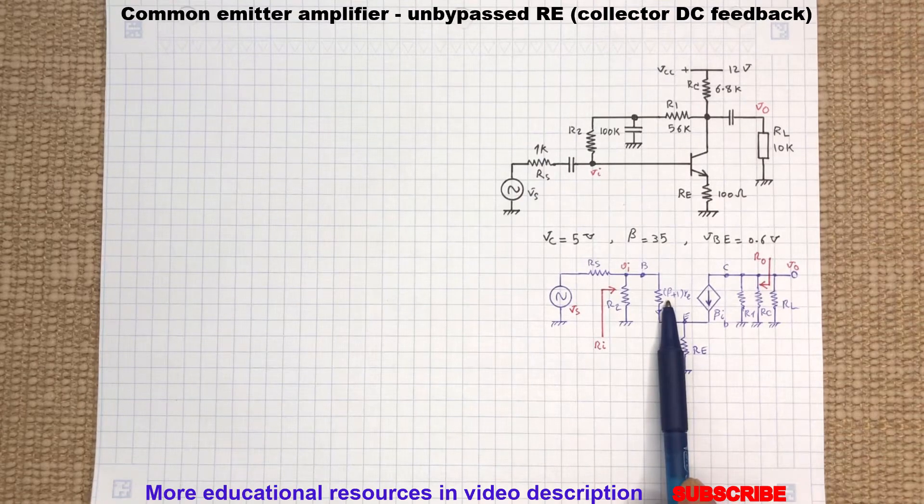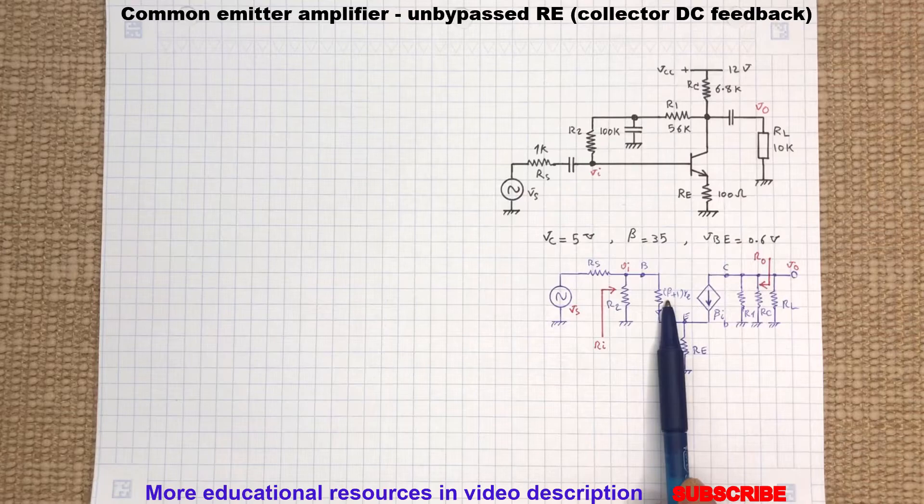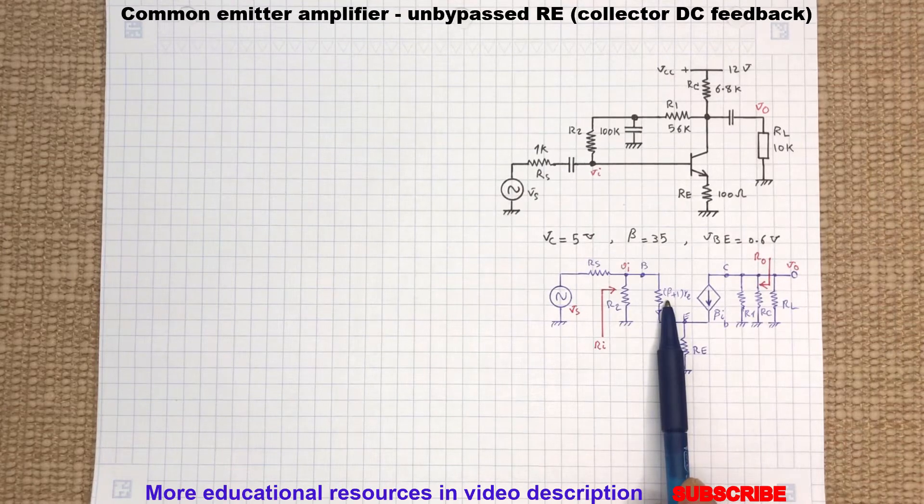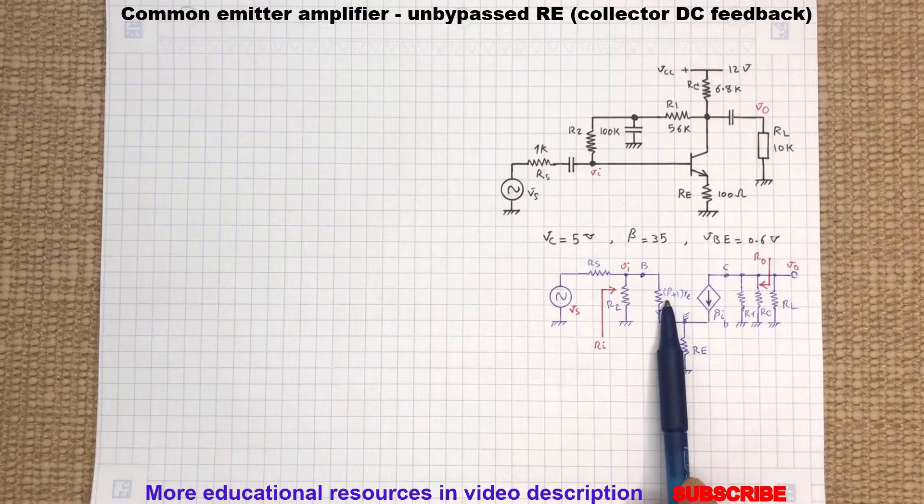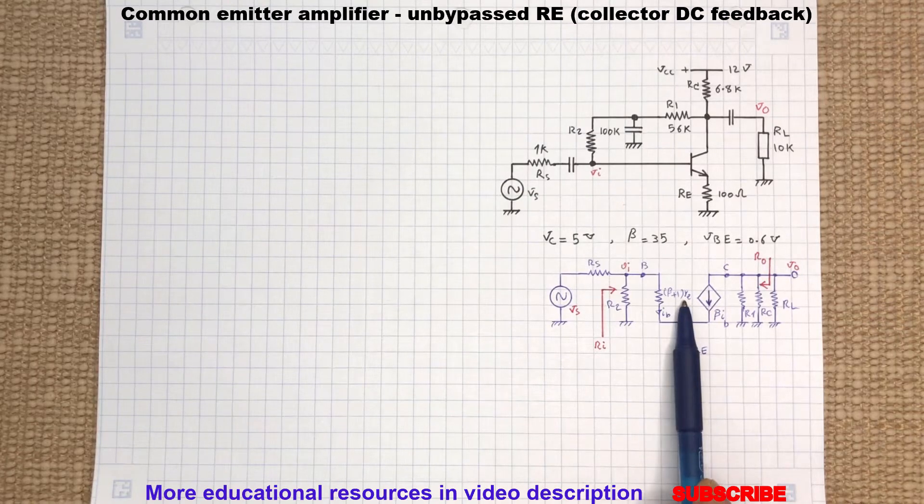Also looking into the base of the transistor, the base emitter resistance equals beta plus 1 multiplied by the emitter's dynamic resistance lowercase re.